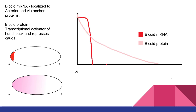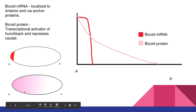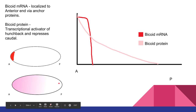Continuing with bicoid — looking at the embryo diagrams, the bicoid mRNA is localized to the anterior end. It has a very high concentration at the anterior end and drops off sharply as you enter the middle area of the embryo. The bicoid protein, on the other hand, forms a really nice gradient — highly concentrated at the anterior end, but with pretty much none of it in the posterior region.